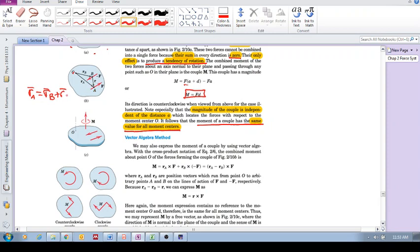R, this position vector from any point on this force to any point on this force, R is R_A minus R_B. So what is this R_A minus R_B? It is simply the position vector between the two forces. And again, we see it becomes independent of taking moments about some point O.